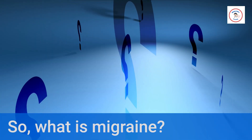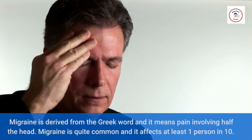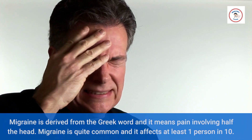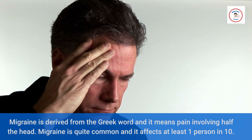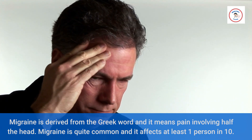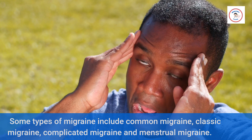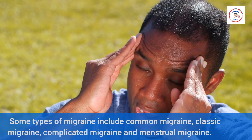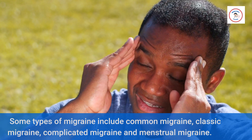So, what is migraine? Migraine is derived from the Greek word, and it means pain involving half the head. Migraine is quite common, and it affects at least one person in ten. Some types of migraine include common migraine, classic migraine, complicated migraine, and menstrual migraine.